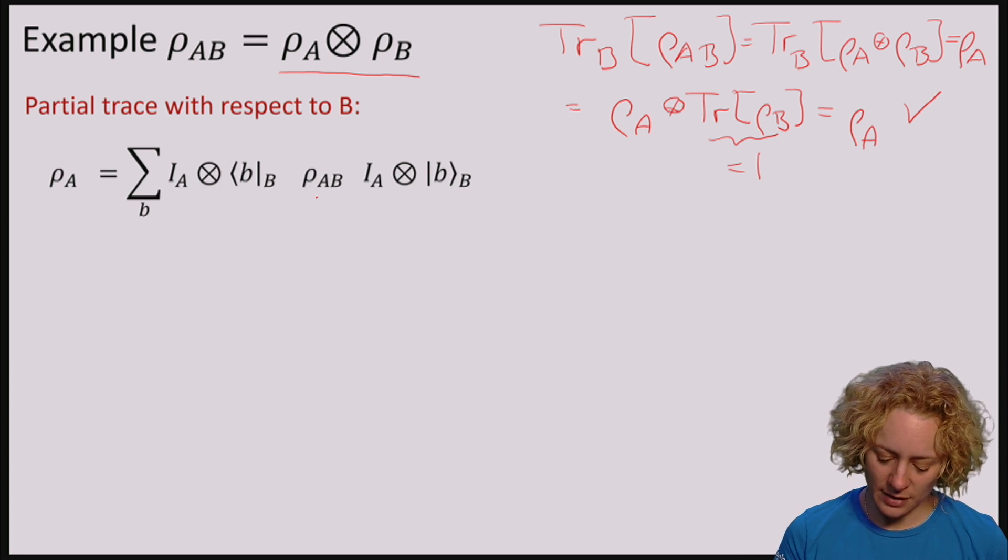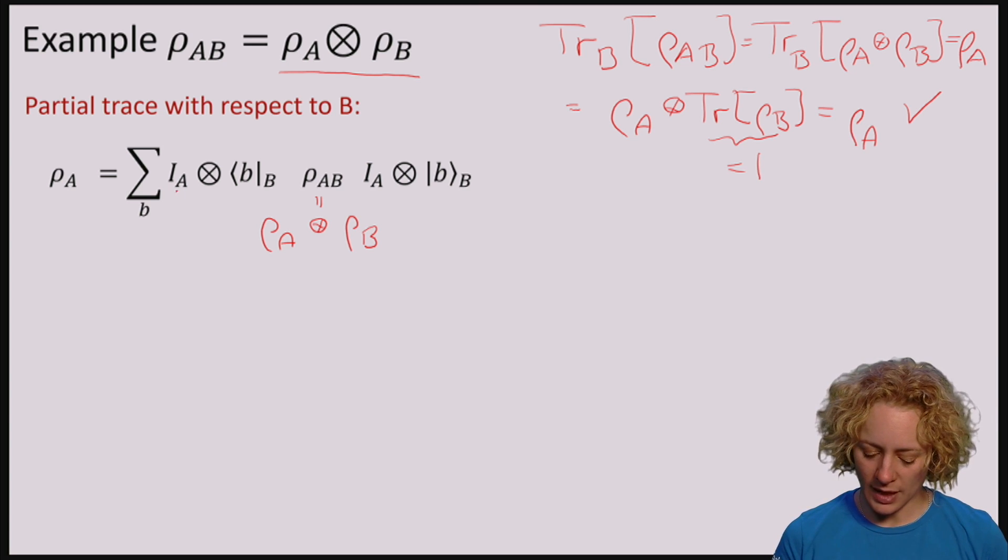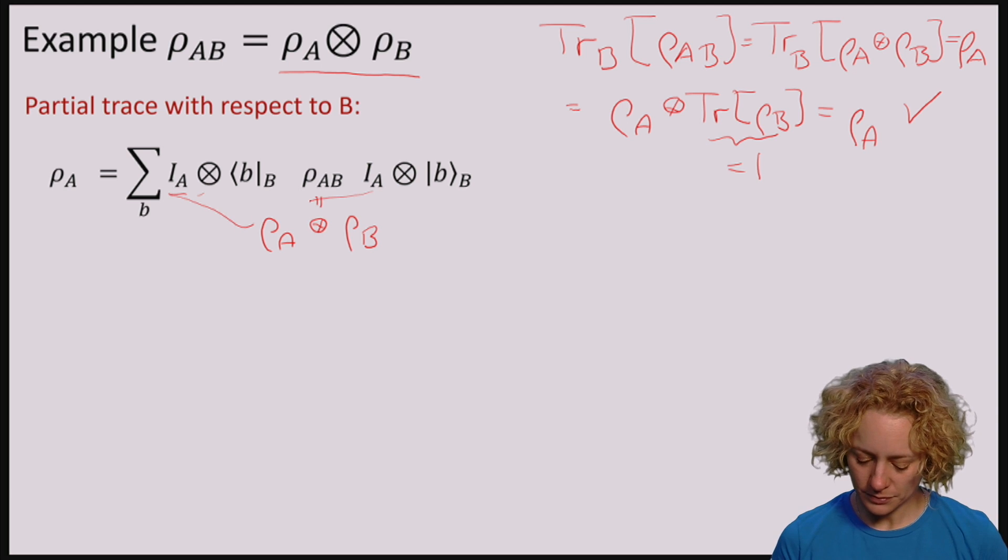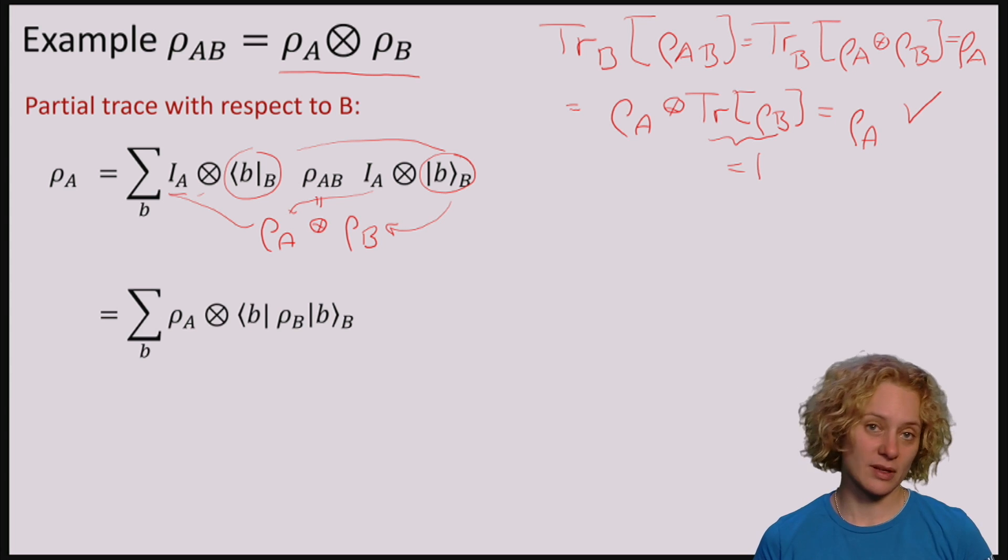So if I plug in here ρ_A tensor ρ_B, then on the A part I'm just applying the identity, and on the B part I sandwich with the little Bs, or in other words I get something that looks like that.